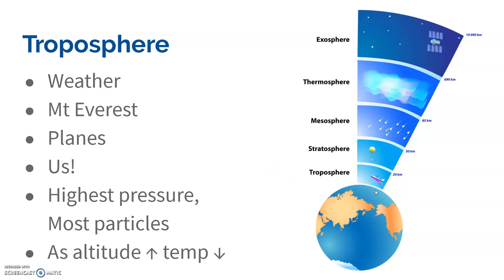As you go up in altitude, the temperature is going to decrease. It's kind of like as you get further away from a campfire, it gets colder and colder because that heat can't radiate out to you. When the sun strikes the surface of the Earth, the solar energy is absorbed, but then it releases infrared radiation — that's the part of light that is the heat. The further away you get from that source of heat, the colder it's going to get, same as backing away from a campfire.